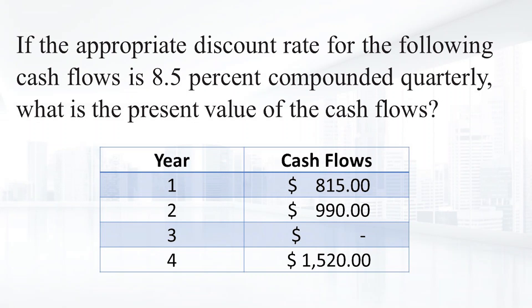If the appropriate discount rate for the following cash flows is 8.5% compounded quarterly, what is the present value of the cash flows?